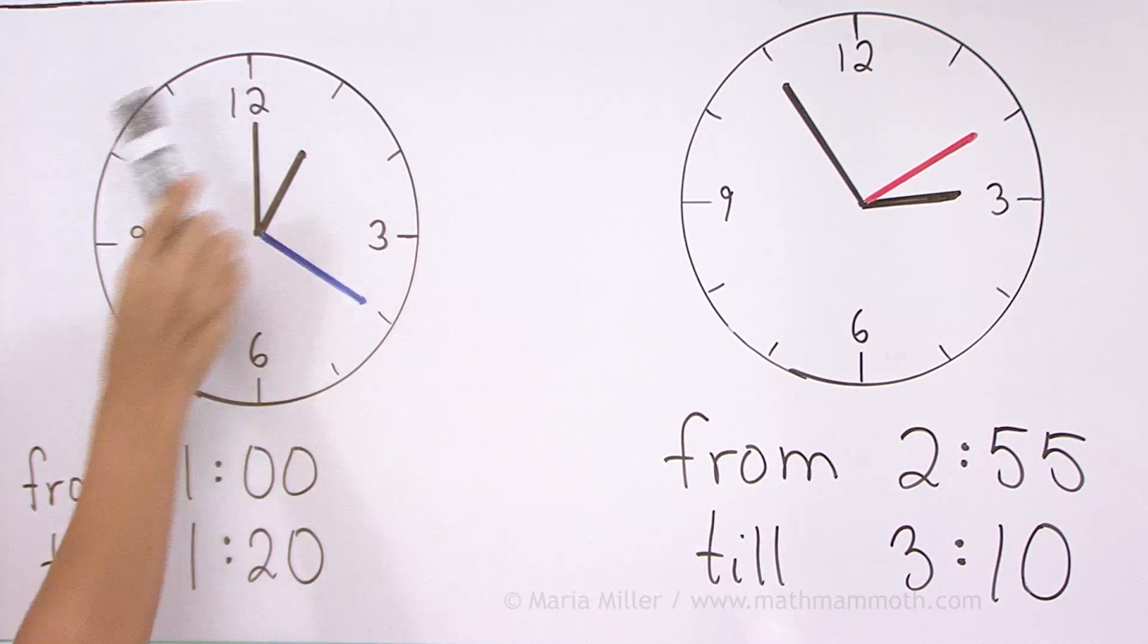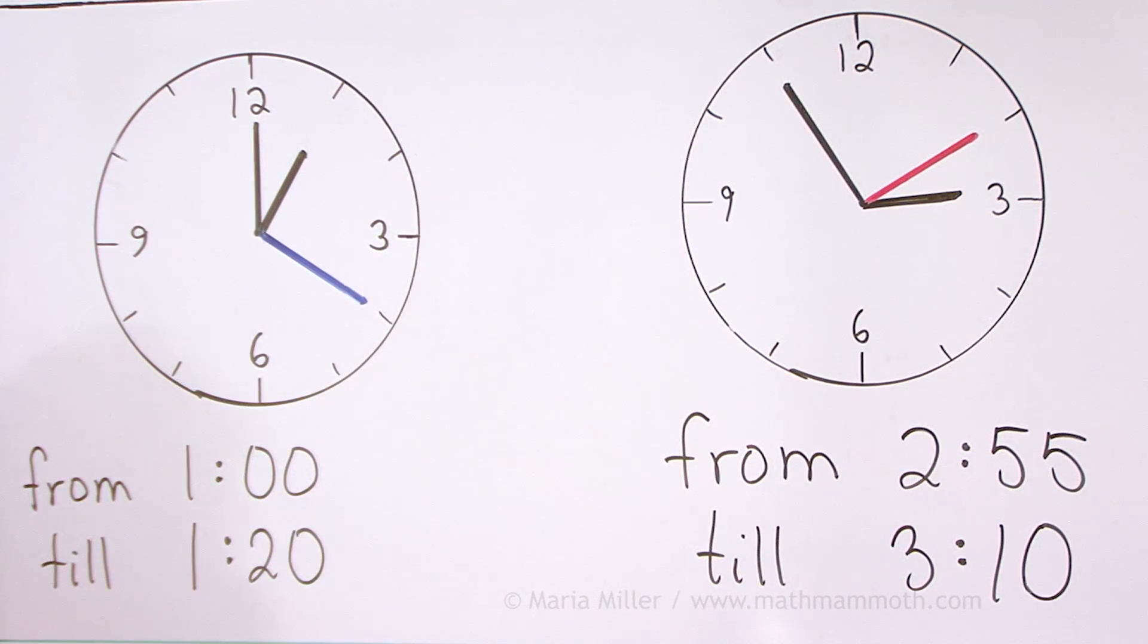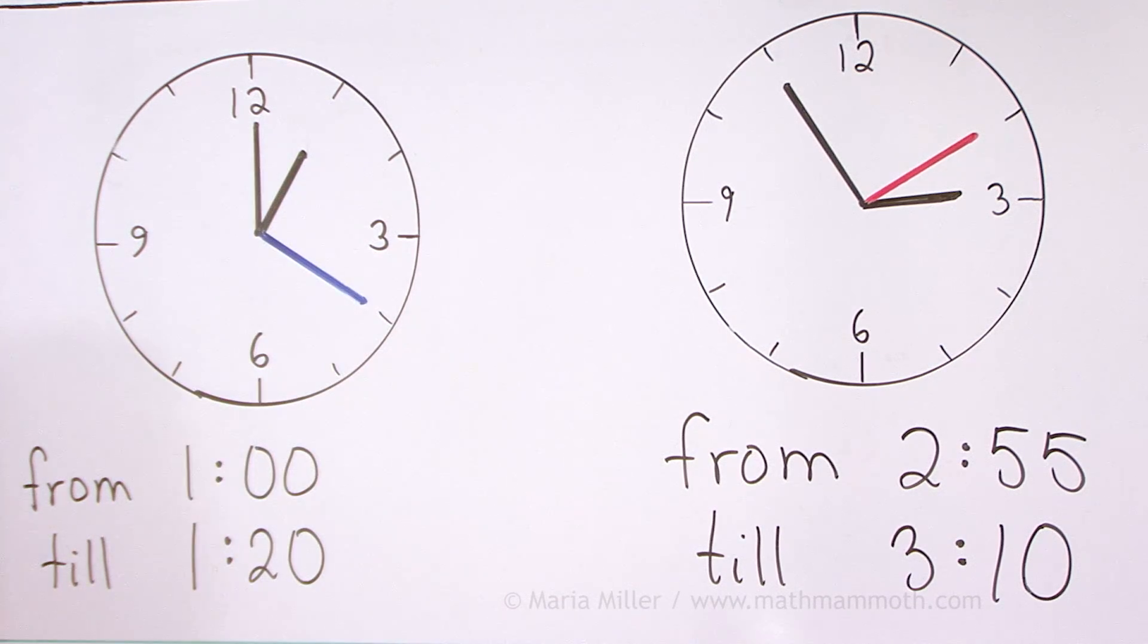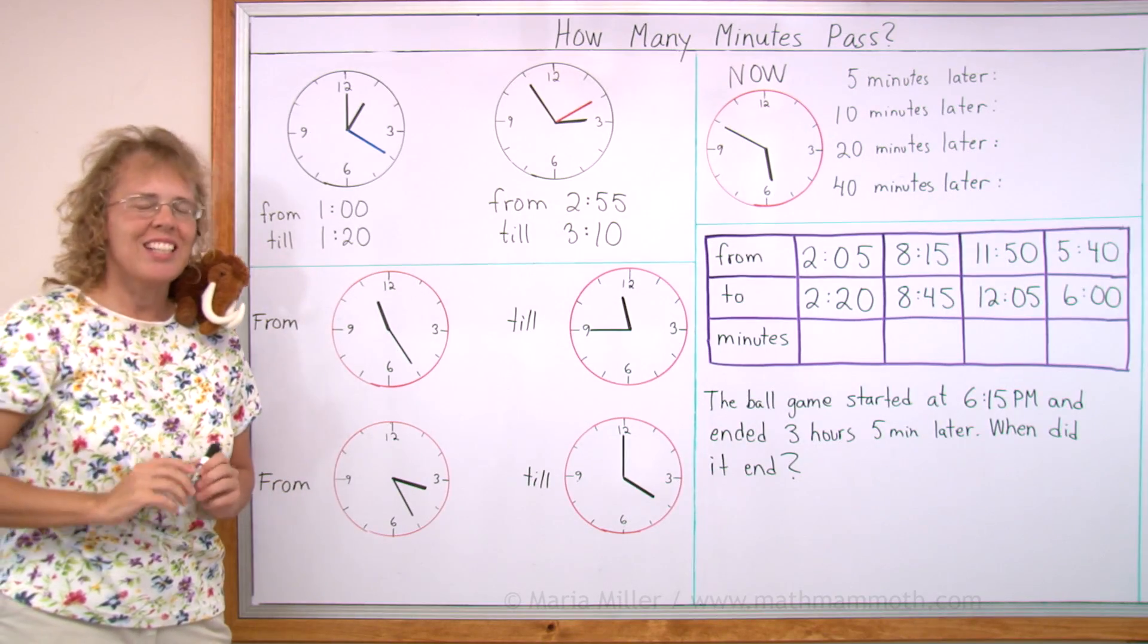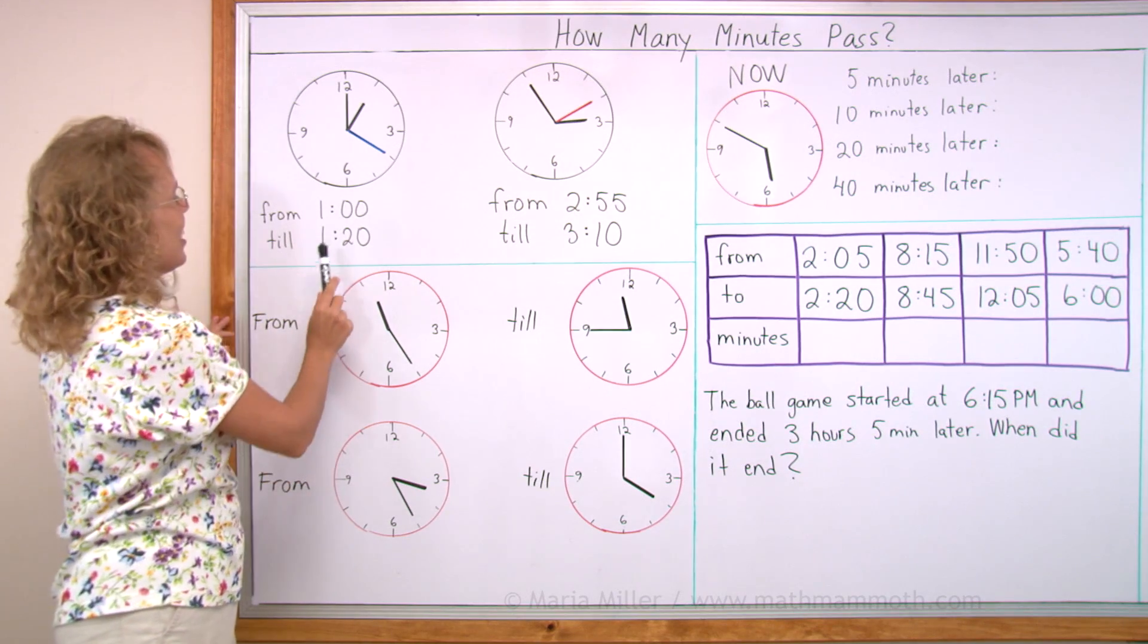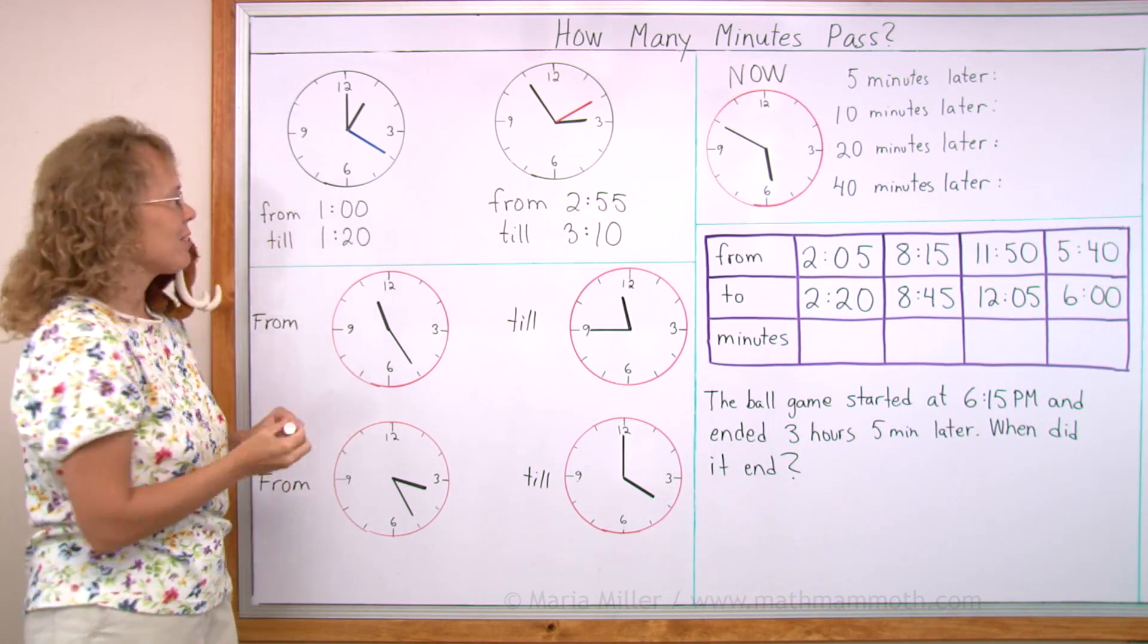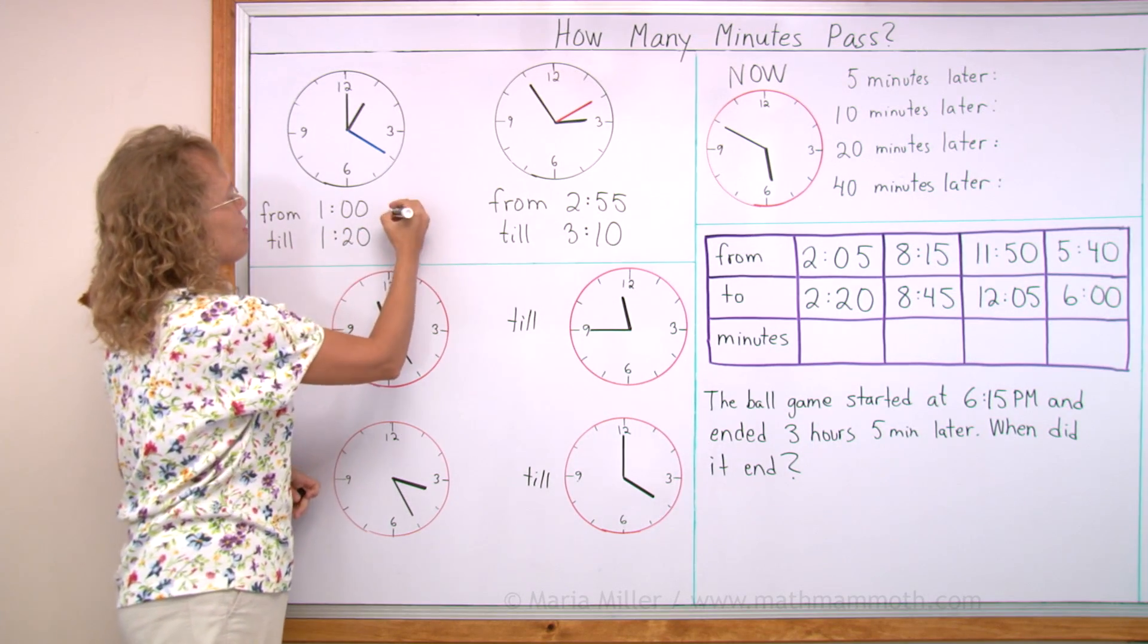For example, here I have a clock that is showing one o'clock. If you look at the black hands, and then if the minute hand travels pointing here and it is 1:20, so how many minutes pass? That's an easy question. At 1:20 we can see that 20 minutes has passed, right? So the answer would be 20 minutes.